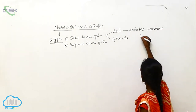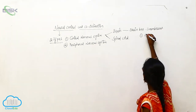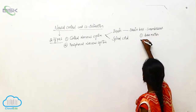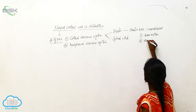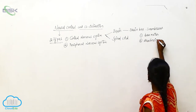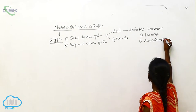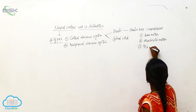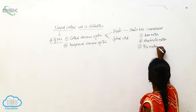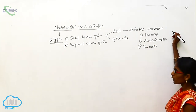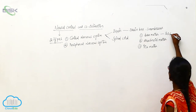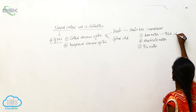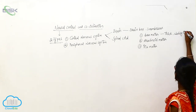The three membranes covering the brain are: first, the Duramater; second, the Arachnoid Matter; and third, the Piamater. The Duramater is a thick, webby-like structure.